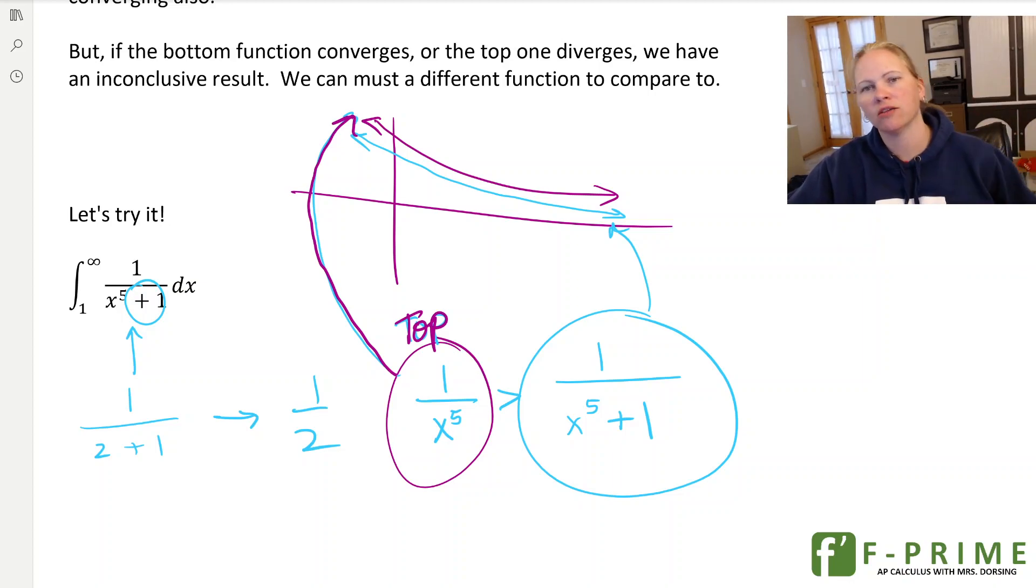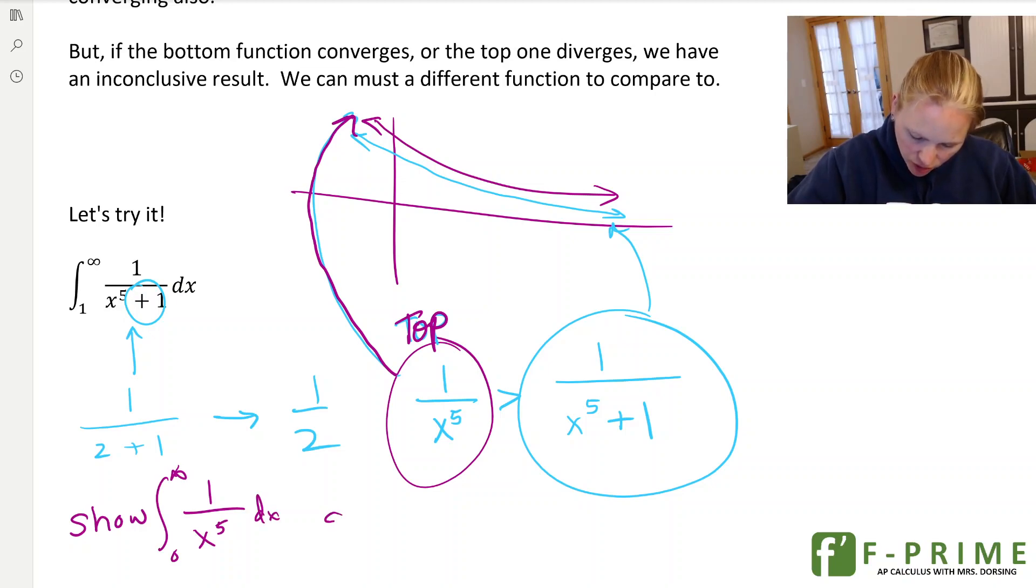So what I need to do is I need to show that 1 over x to the 5th, this integral converges. So I need to make sure I understand how this comparison test works and what I need to show. So if this does in fact converge, then it pushes down on that other function, and the other function will converge. But if this one ends up diverging, then I got nothing and I have to start over.